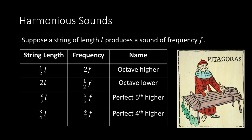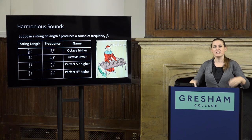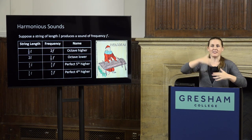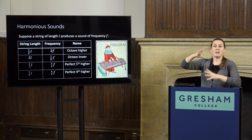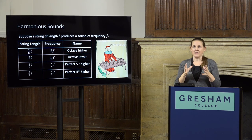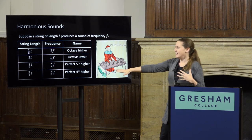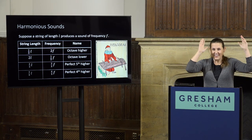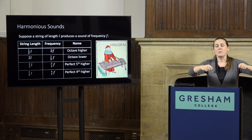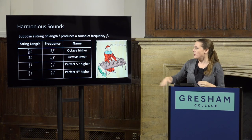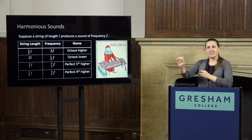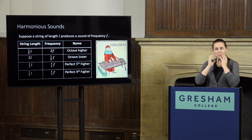The other two ratios are also very small number ratios. If you compare a string with one that's two-thirds the length — meaning the frequency is multiplied by three over two — that interval is called a perfect fifth, and those two sounds are pleasing together. Finally, the interval we call a perfect fourth is when you take a string and then one that's three-quarters the length of your initial string, corresponding to a frequency increase of four-thirds. These simple ratios involving the numbers one, two, three, and four produce pleasing sounds together.